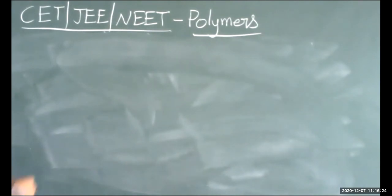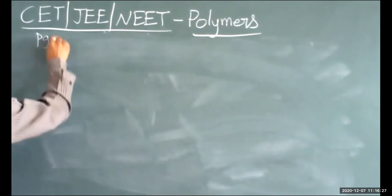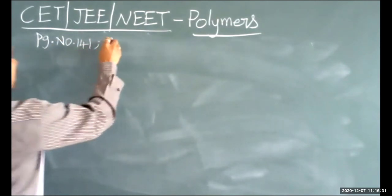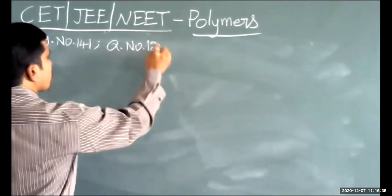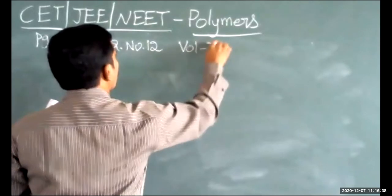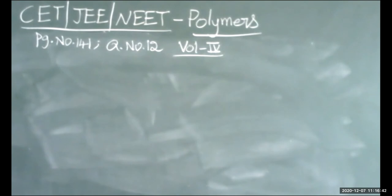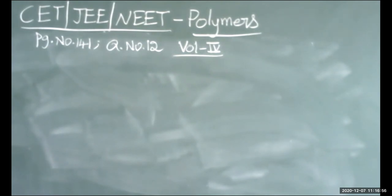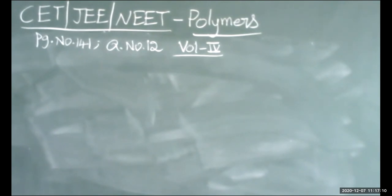Question number 12: which of the following polymers can be softened and hardened repeatedly on heating and cooling without any change in its properties?